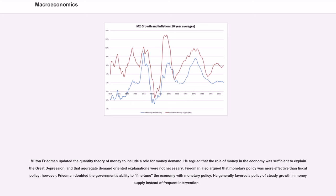Milton Friedman updated the quantity theory of money to include a role for money demand. He argued that the role of money in the economy was sufficient to explain the Great Depression, and that aggregate demand-oriented explanations were not necessary. Friedman also argued that monetary policy was more effective than fiscal policy. However, Friedman doubted the government's ability to fine-tune the economy with monetary policy. He generally favored a policy of steady growth in money supply instead of frequent intervention.